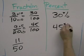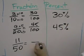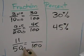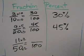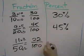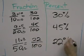So we have 45%. And this one's very easy. Multiply the numerator and the denominator by 2, so we get 22%.